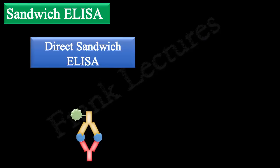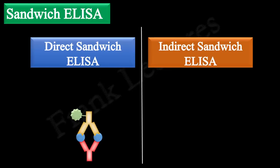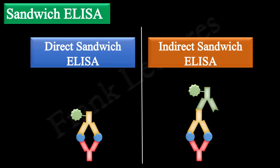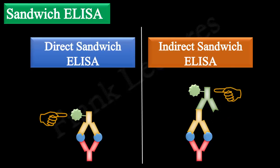Sandwich ELISA can be further divided into two types: direct sandwich ELISA and indirect sandwich ELISA. This classification is based on whether the enzyme-linked antibody is directly or indirectly detecting the antigen. In direct sandwich ELISA, the target antigen is detected by the conjugated antibody itself, so this is direct detection. In indirect sandwich ELISA, a primary antibody first binds to the target antigen, and the conjugated secondary antibody detects the antigen-bound primary antibody, so this is indirect detection.